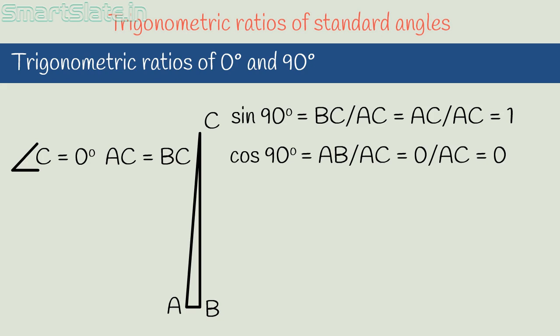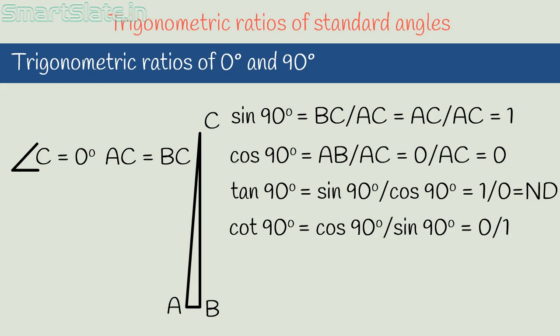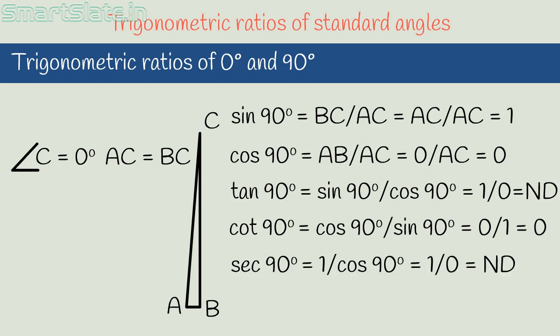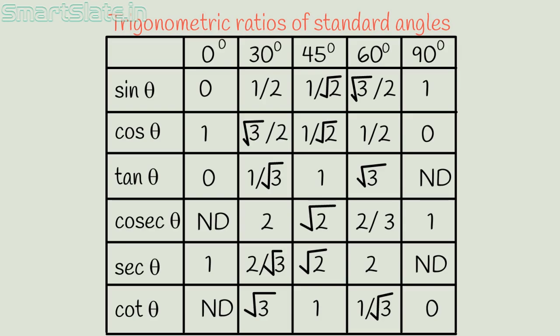Since sin 90° = 1 and cos 90° = 0, we can find the remaining ratios. Tan 90° = sin 90°/cos 90° = 1/0, which is not defined. Cot 90° = cos 90°/sin 90° = 0/1 = 0. Sec 90° = 1/cos 90° = 1/0, which is not defined. Cosec 90° = 1/sin 90° = 1/1 = 1. We have now formed the trigonometric ratios for 0°, 30°, 45°, 60°, and 90°.